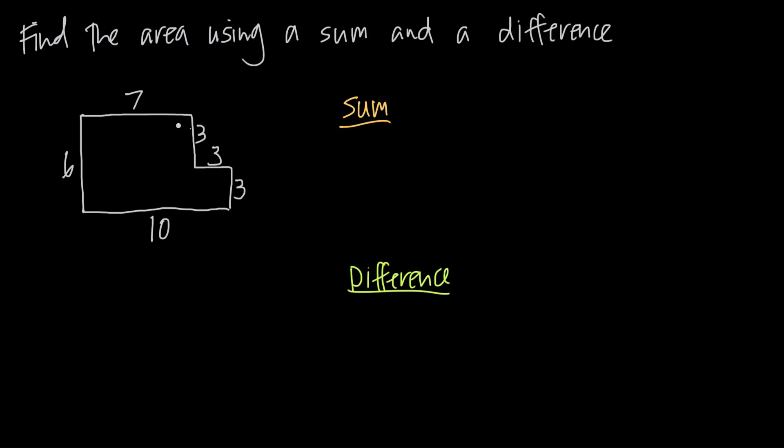So there are two different ways that we can find the area of this shape. We can add together the two different rectangular areas, so we can define this rectangular part as one area, and then we can add that to the area of this smaller rectangular part, and that would be a sum. So we would add these two areas together. Let's go ahead and see what that looks like.